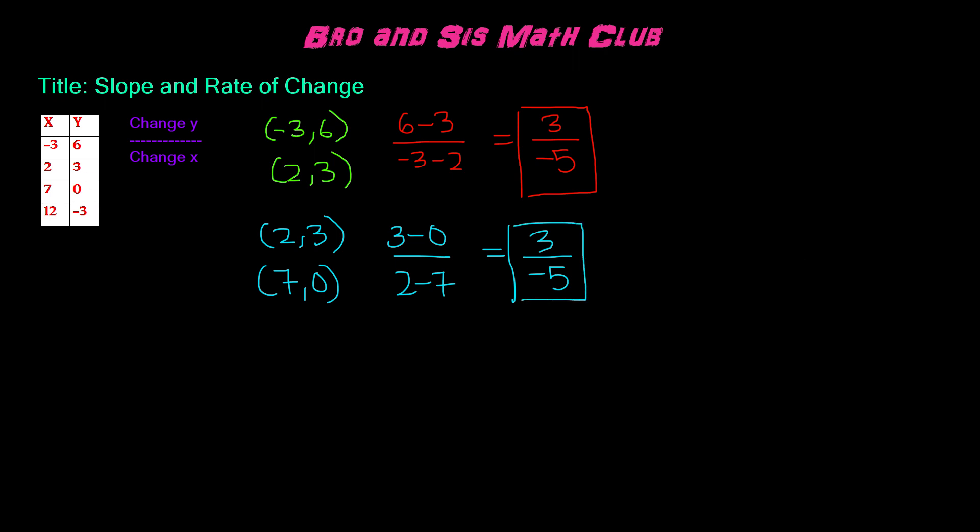Now let's go ahead and do (7, 0) and (12, -3). So we have 0 minus -3. But remember, since we're subtracting a negative, it's always a good idea to put this in parentheses so we don't confuse ourselves. We can write this as (0 - (-3)) over (7 - 12). Negative and negative become positive, so it becomes 3 over (7 - 12), which is -5. So the rate of change for these coordinates is 3 over -5 or -3/5.